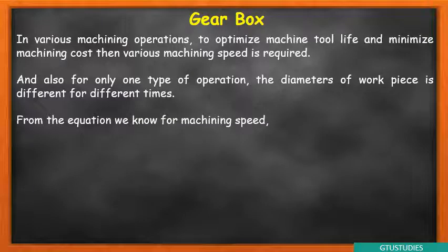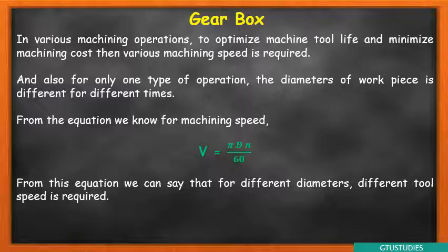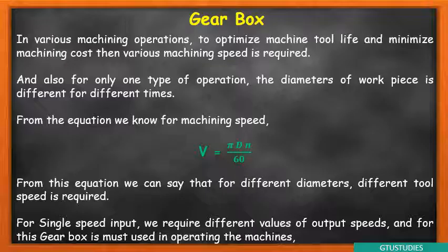From the equation, we know for machining speed we can calculate V equals pi D N by 60. For single speed input we require different values of output speed, and for this, gearbox is a must used in operating the machines. That is the gearbox main purpose.